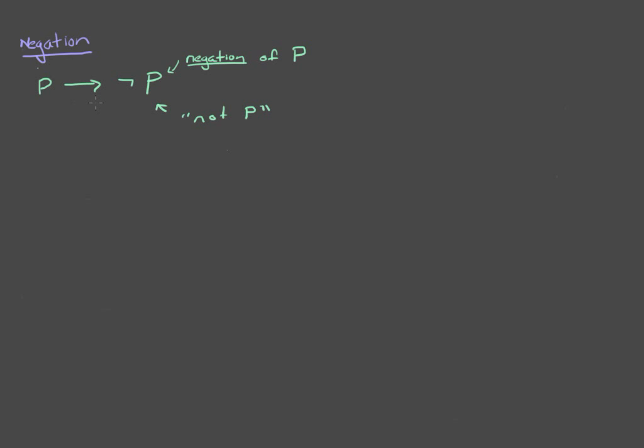And the way that we express that in propositional logic is through something called a truth table. And all that it is is just a convenient way of writing what I was just saying. So you consider P as two possibilities, true and false.